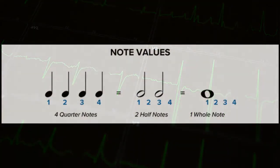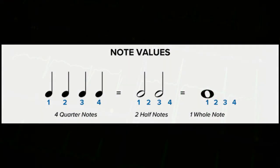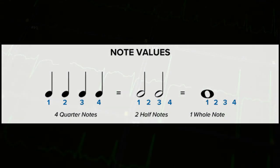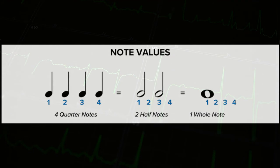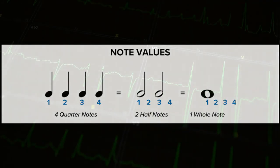In four-four time, the quarter note receives one beat. It sets the pulse for the piece of music. Each measure receives four beats. So, therefore, any combination of four quarter notes, two half notes, or one whole note, they all equal four, and they'll all fit.